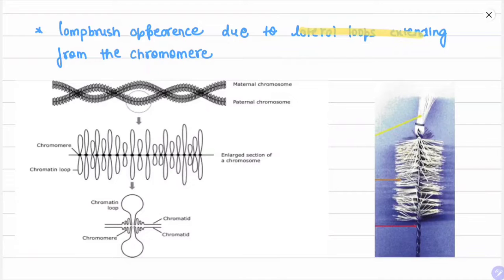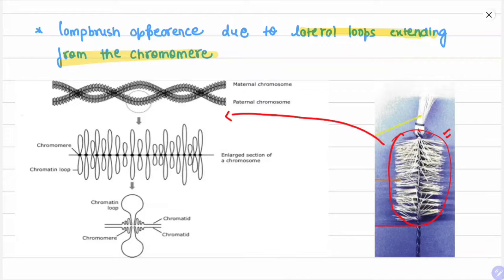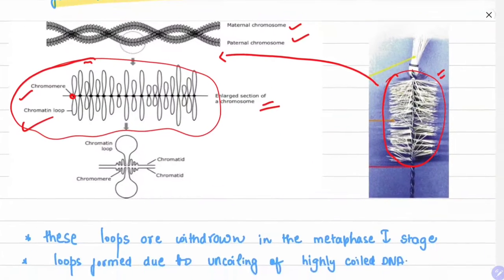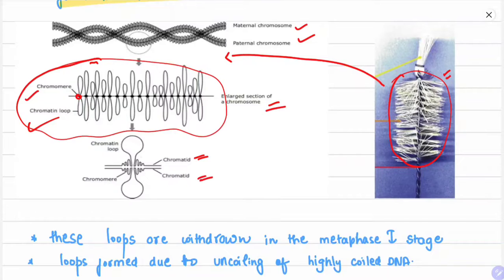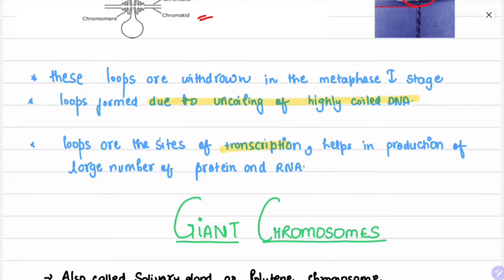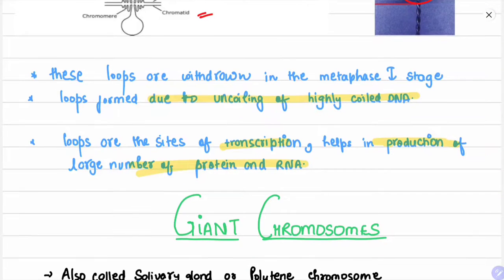Lampbrush chromosomes are observed during the prolonged diplotene stage. Their appearance is due to lateral loops extending from the chromosomes, resembling a lampbrush. The structure consists of chromomeres with chromatin loops extending out. These loops are formed due to uncoiling of highly coiled DNA, and they are the sites of transcription, helping in the production of large numbers of proteins and RNA.